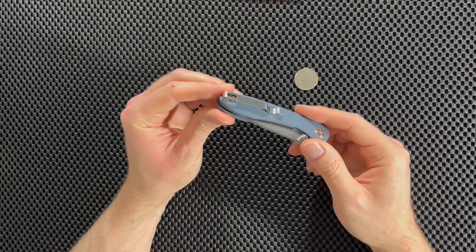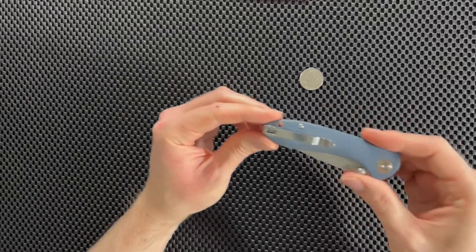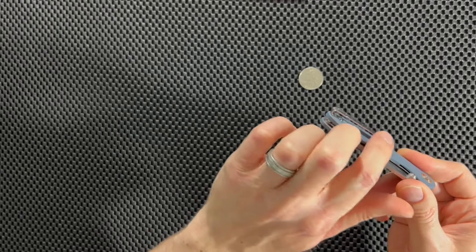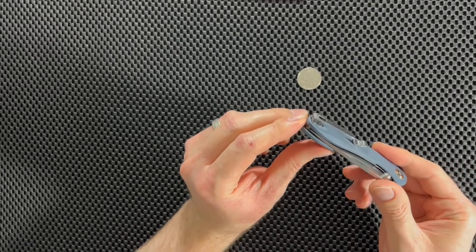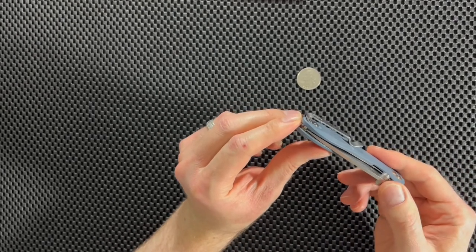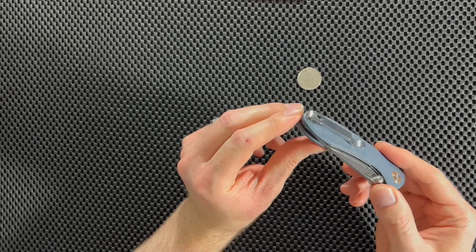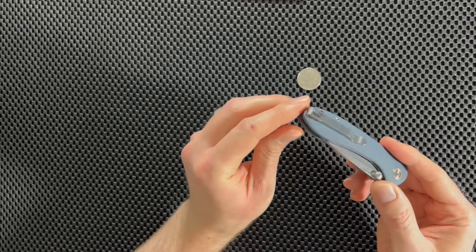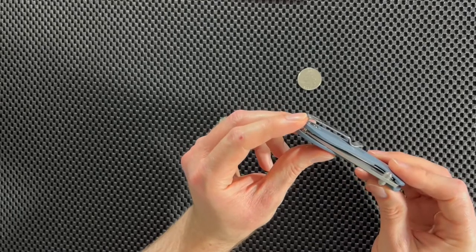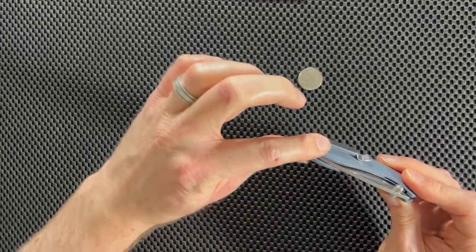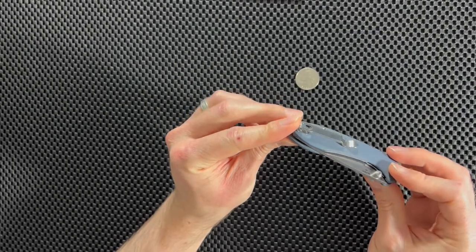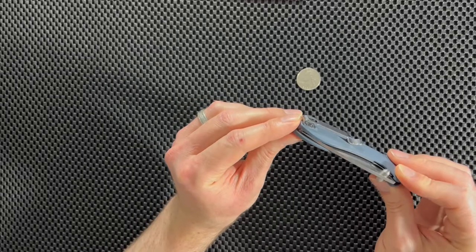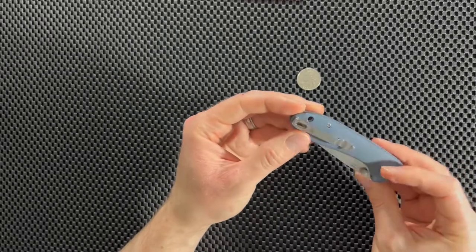Now the next thing I want to talk about is the carry clip. And you can see it right here. And when you have this type of a clip, it's actually called a deep carry clip. And that's a feature that I really like to see on these knives that you carry around in your pocket. For me, it just kind of hides the knife a little bit better. You've got less of it sticking out of your pocket. And I prefer that design over a regular clip that still will have a little bit of the knife sticking up. Now it's not a deal breaker for me if it doesn't have a deep carry clip, but it is something that I do like to see when I can get it.